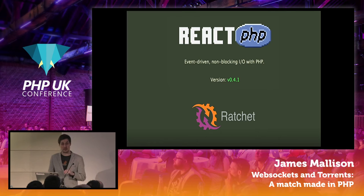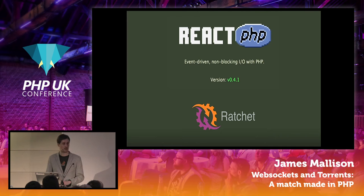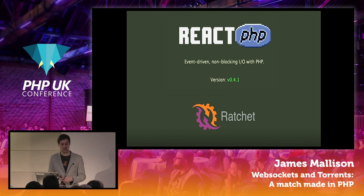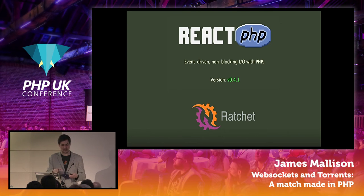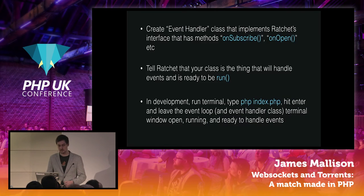React is a PHP implementation of an event loop that uses select calls by default, which is really slow. That's why React, AMP PHP, and other PHP event loop implementations suggest installing libevent or libev — cross-platform C implementations of the event loop. When you call interface methods on this library, if you have these libraries installed it will choose to use libevent or libev. If not, it falls back to the slower PHP version. These C-based libraries are a hell of a lot more performant.